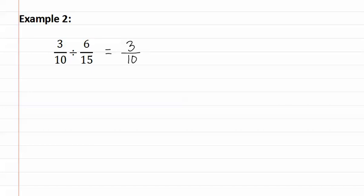We change the division symbol into a multiply, and then we find the reciprocal of the second fraction, which remember means flip it over or invert it. So we would have fifteen sixths.